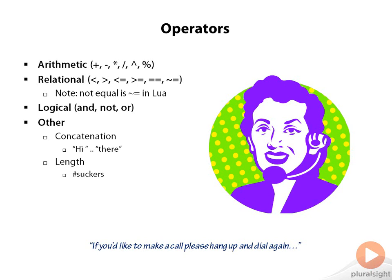Lua has two special operators. First, concatenation, or joining two strings, is done with a dot dot. You can see an example here. And next, Lua has a very convenient length operator, which will give you the length of a value if the value supports it. For example, you could get the length of a string or the length of a list of values stored in a table.